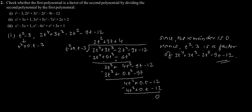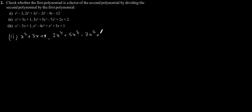Now the second problem. The second problem is x squared plus 3x plus 1, and 3x to the power 4 plus 5x cubed minus 7x squared plus 2x plus 2. Let's find out whether the first polynomial is a factor of the second polynomial by dividing the second polynomial by the first polynomial.